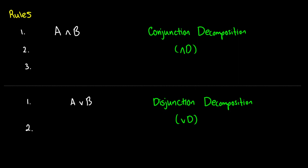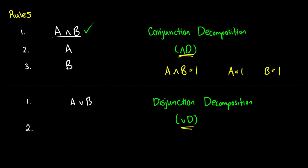The first rules we're looking at are conjunction decomposition and disjunction decomposition. We abbreviate these as 'and d' and 'or d' respectively. In a tree, if you have A and B, we can write down A and write down B and check it off to show we've decomposed it into its atomic form. This is because A and B is true when A is true and B is true. So anytime we see two well-formed formulas joined with a conjunction, we break them into two components, justified by citing the line number and 'conjunction decomposition.'